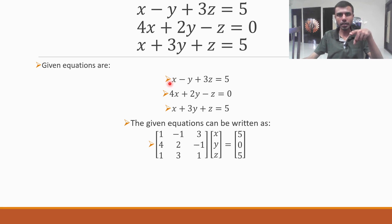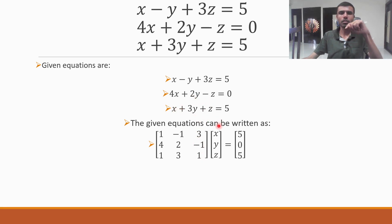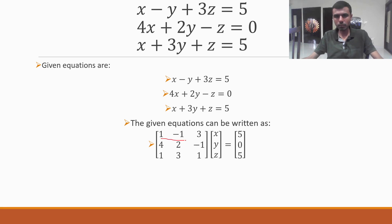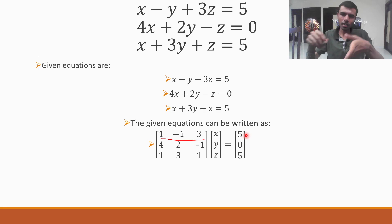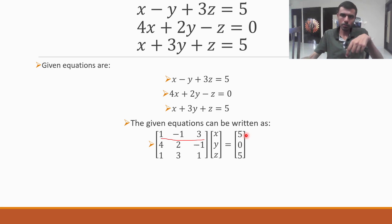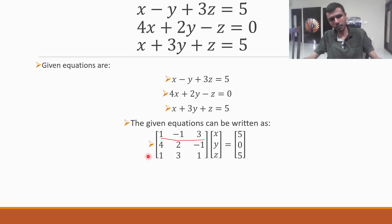Here you see x coefficient is 1, y coefficient is minus 1, and z coefficient is 3. Next: 4, 2, minus 1, and 1, 3, 1. And into x, y, z you will get this. You can just cross check — row by column: 1 into x minus 1 into y plus 3 into z equals 5. So you will get your equations back again. So you can write the given system of equations like this.